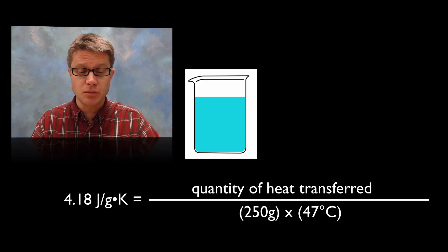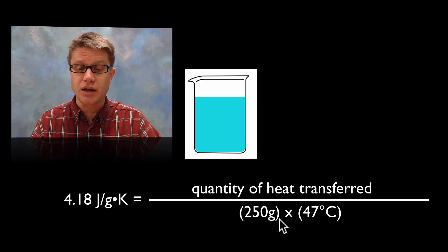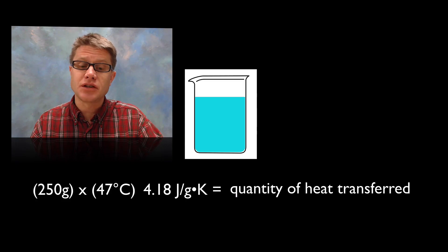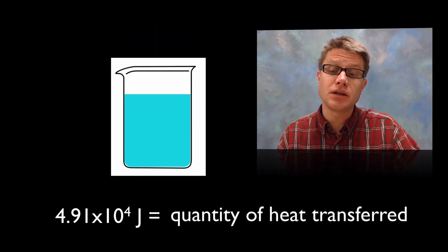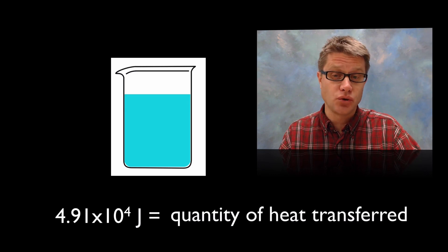We do some simple algebra. In other words I'm just going to multiply both sides by this. And so I'm going to move it to there. And now I just simplify and I'm going to find that the quantity of heat that was transferred is 4.91 times 10 to the fourth joules.